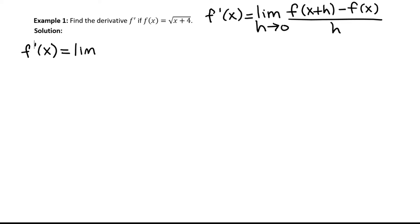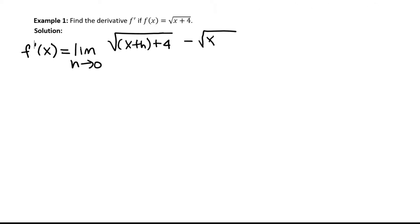We'll write the limit as h approaches 0. For the function square root of x plus 4, where we have f of x plus h, we'll replace the x with x plus h. We still have the plus 4. Minus f of x is just our function, which would be the square root of x plus 4, and this will be divided by h.